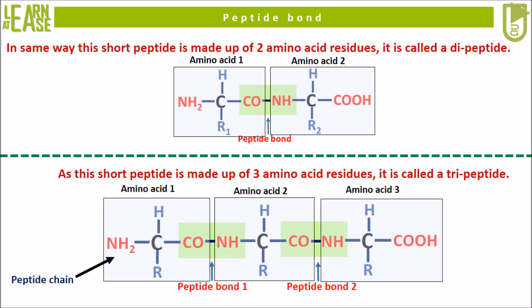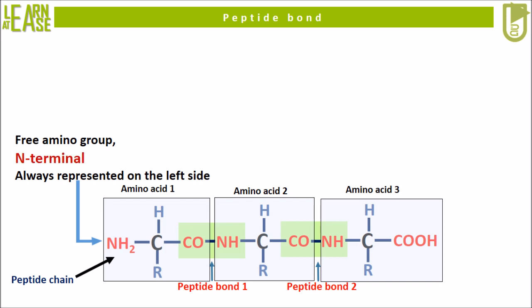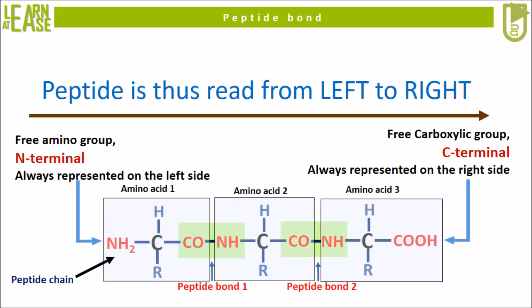In representing a peptide, the free alpha amino group is represented on the left-hand side; this end of the peptide with the free amino group is termed the N-terminal. Whereas the free carboxylic group is represented on the right-hand side of the peptide; this end with the free carboxylic group is termed the C-terminal. The peptide is read from N-terminal to C-terminal, and thus from left to right.